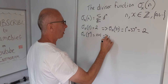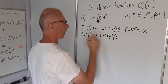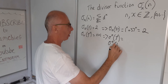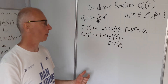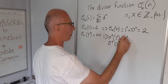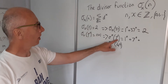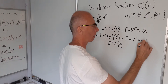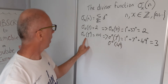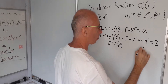Let's try sigma_0(7²), which is sigma_0(49). The divisors of 49 are 1, 7, and 49. Raising each to the power of 0 gives 1 plus 1 plus 1 equals 3. Since n equals 2 here, we confirm n+1 equals 3.